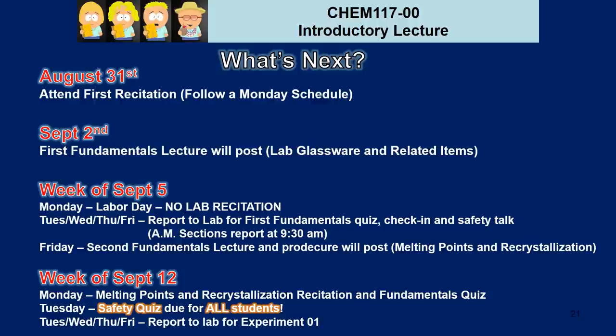On the week of September 5th, Monday is Labor Day so there's no lab recitation — you already had that the previous week. But on Tuesday, Wednesday, Thursday, or Friday during your assigned time, you will report to lab for a Fundamentals quiz on glassware, checking into your drawer, and a safety talk given by me. AM sections can report at 9:30 AM since the check-in process does not take the full 3 hours and 50 minutes. That Friday, a second Fundamentals lecture covering melting points and recrystallization will post through Blackboard. Then on the week of September 12th, you'll have your first regular recitation covering melting points and recrystallization, involving a Fundamentals quiz and a discussion of the procedure with your TA. By September 13th, I expect all students to have passed the safety quiz, and you'll report to lab to conduct Experiment 1.